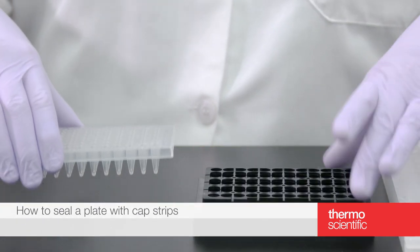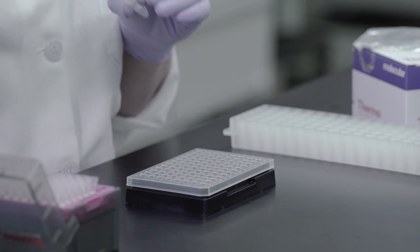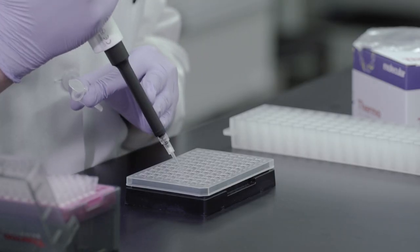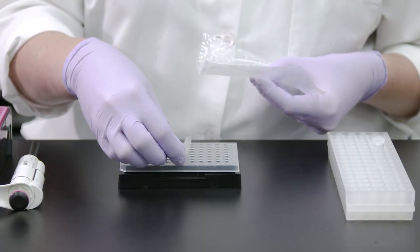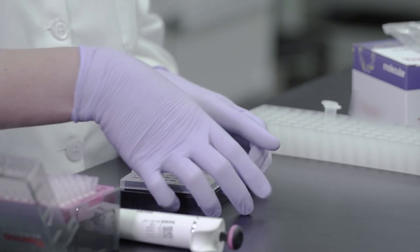To seal your plate using cap strips, first place your plate securely in the PCR plate rack. After pipetting your PCR samples into each well, remove the cap strip from the packaging and align the cap strip to the designated wells.